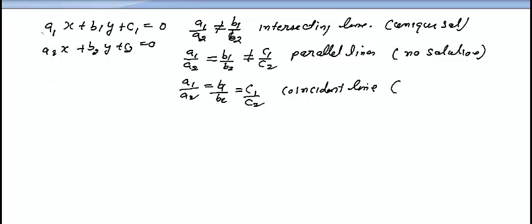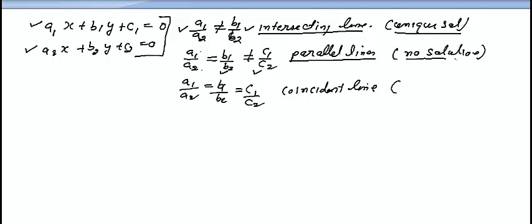Students, just repeating what we covered in the last lecture: these are the pair of two linear equations. If A1/A2 is not equal to B1/B2, it is the situation of intersecting lines — also known as a unique solution. If A1/A2 equals B1/B2 but not C1/C2, it is the situation of parallel lines and there is no solution.